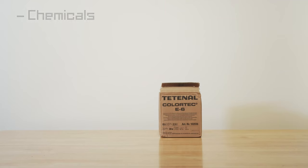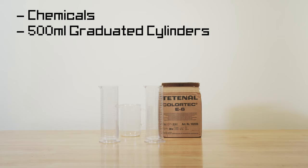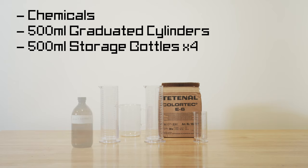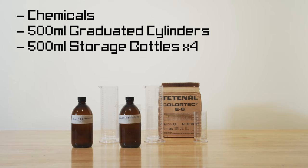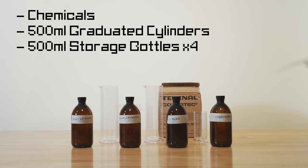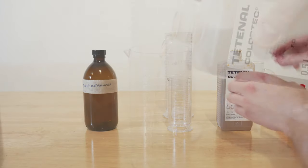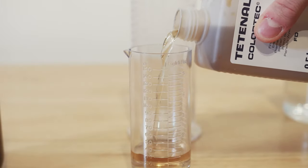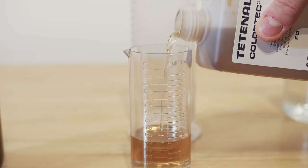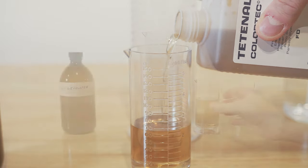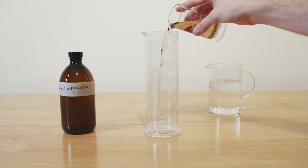In order to mix a 500ml batch of chemistry, we're going to need at least one but preferably two 500ml graduate cylinders, one small measuring cylinder, as well as four storage bottles. I find that amber glass storage bottles work really well. In order to make a 500ml solution of first developer, we are going to measure out 100ml of concentrate in our smaller cylinder, and then we're going to make it up in the bigger cylinder to 500ml using tap water.